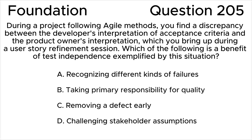During a project following agile methods, you find a discrepancy between the developer's interpretation of acceptance criteria and the product owner's interpretation, which you bring up during a user story refinement session. Which of the following is a benefit of test independence exemplified by this situation?